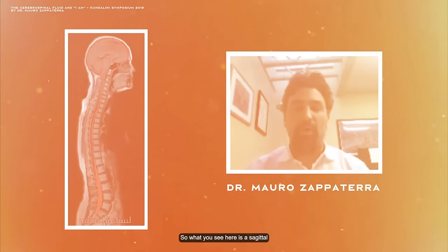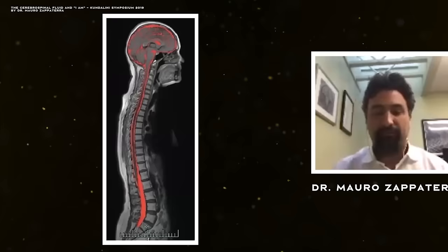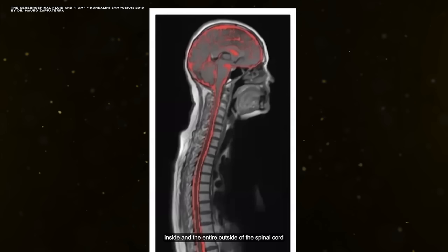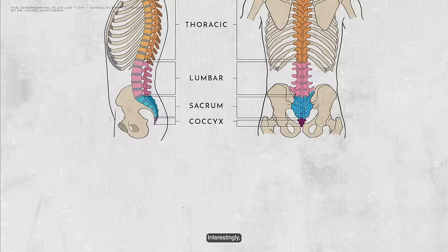What you see here is a sagittal, or side view, of an MRI of an adult human. The cerebrospinal fluid is colored in red. From this image, you can see how it bathes the entire outside of the brain, as well as the spaces inside and the entire outside of the spinal cord. Our central nervous system is floating in and being bathed by CSF.